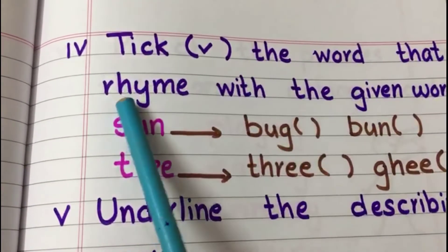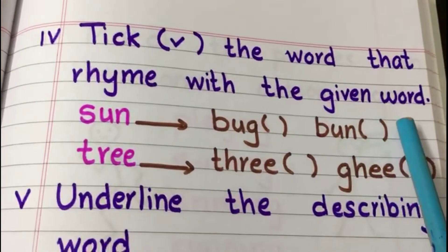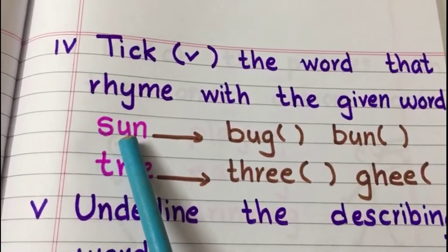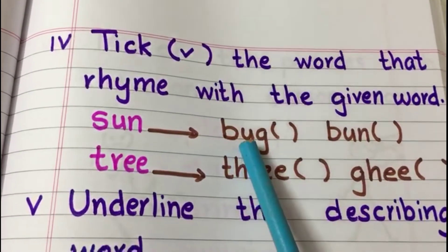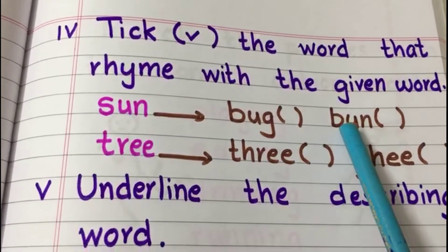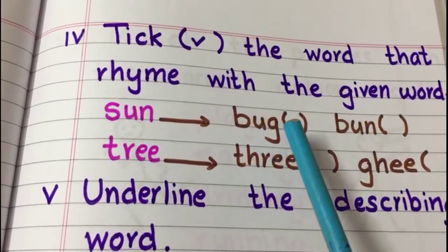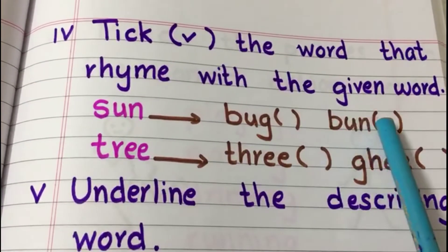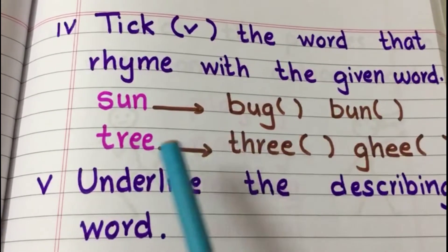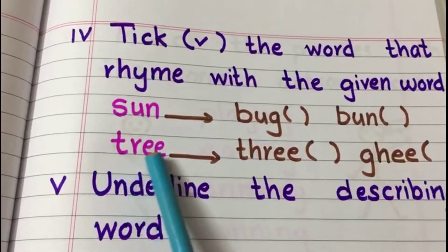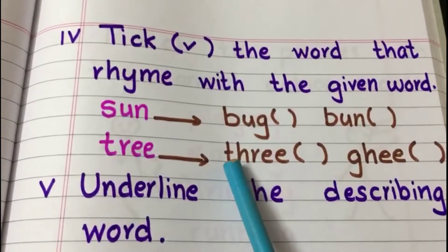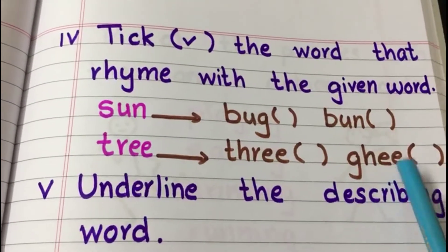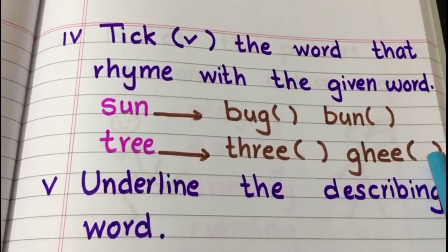Now let's see the fourth question. This question is again based on rhyming words — tick the word that rhymes with the given word. Here we have words like sun and tree. In front of sun we have words like bug and bun — the child should identify the right rhyming word and tick it. The second example is tree — ask your child to identify the similar ending sound and tick the right rhyming word.